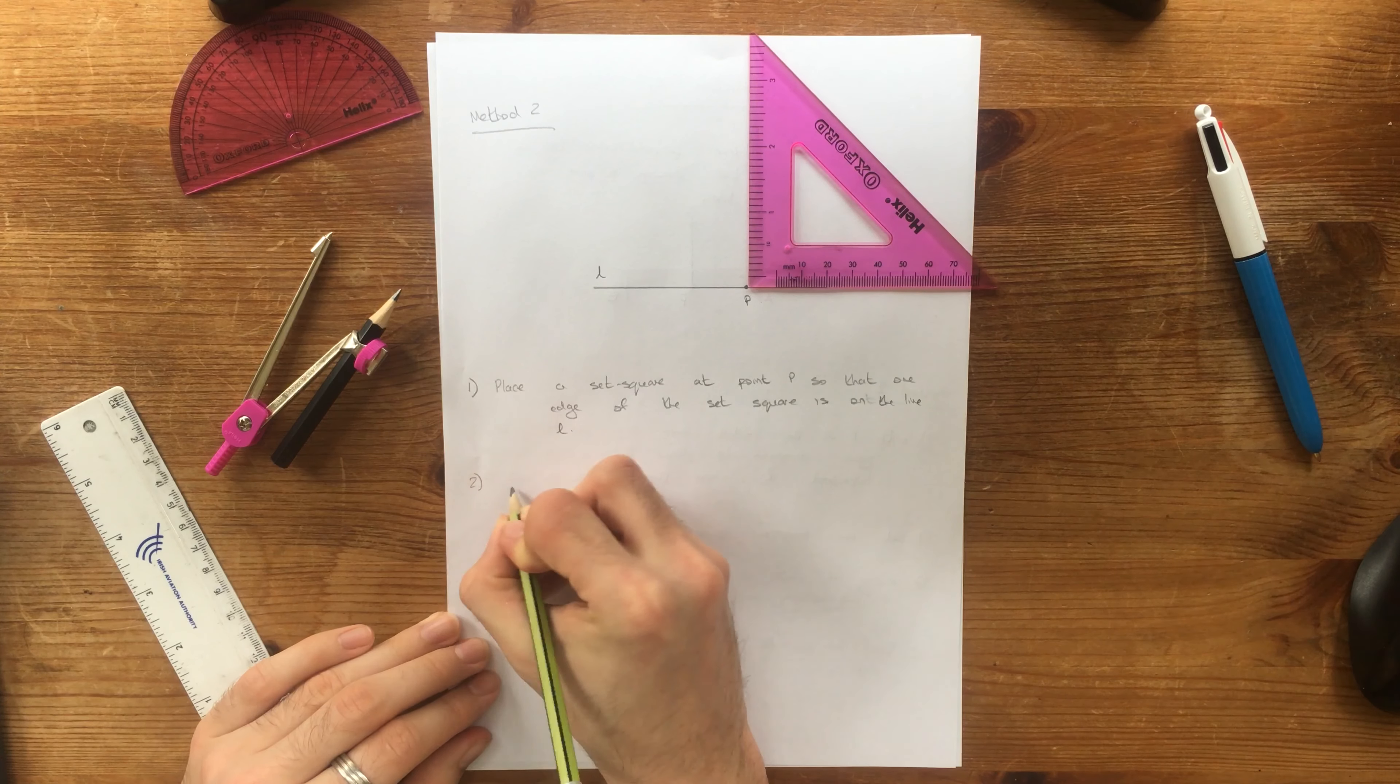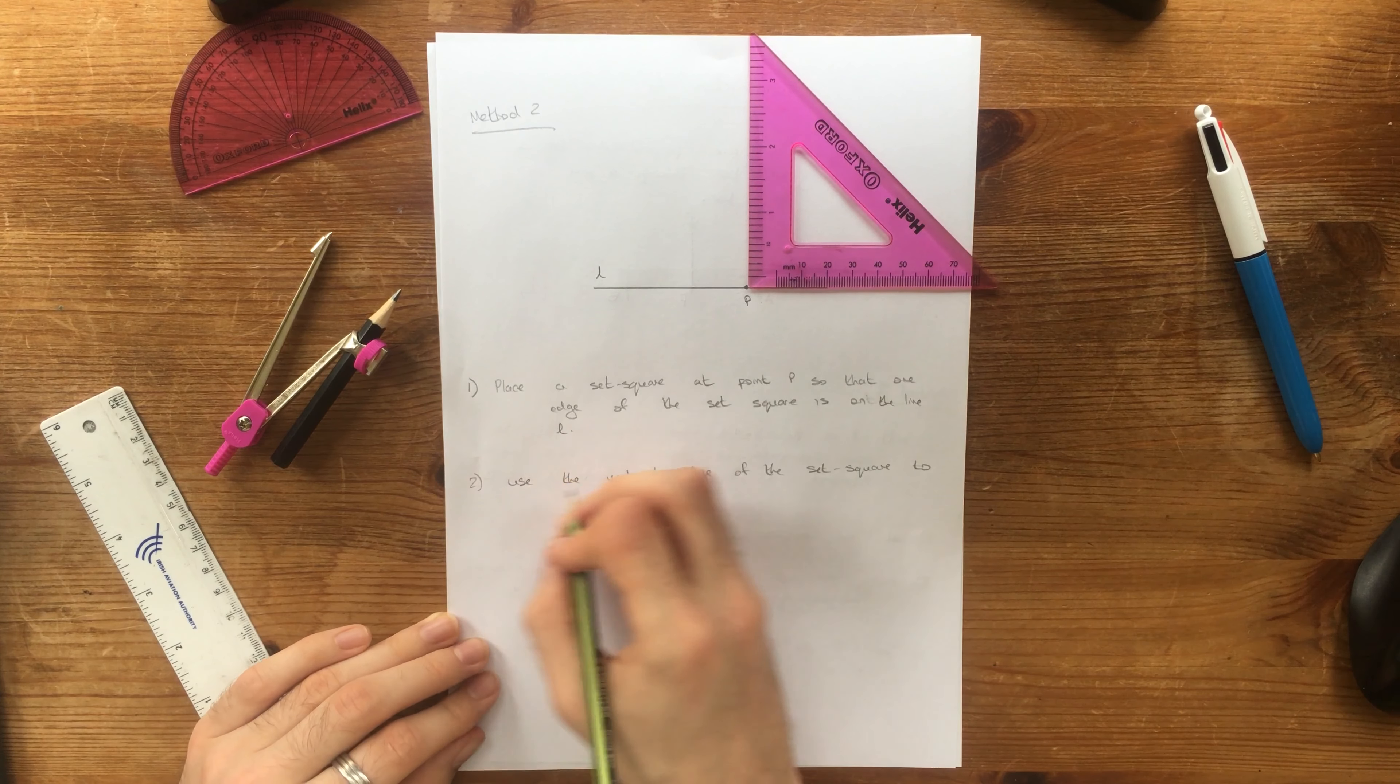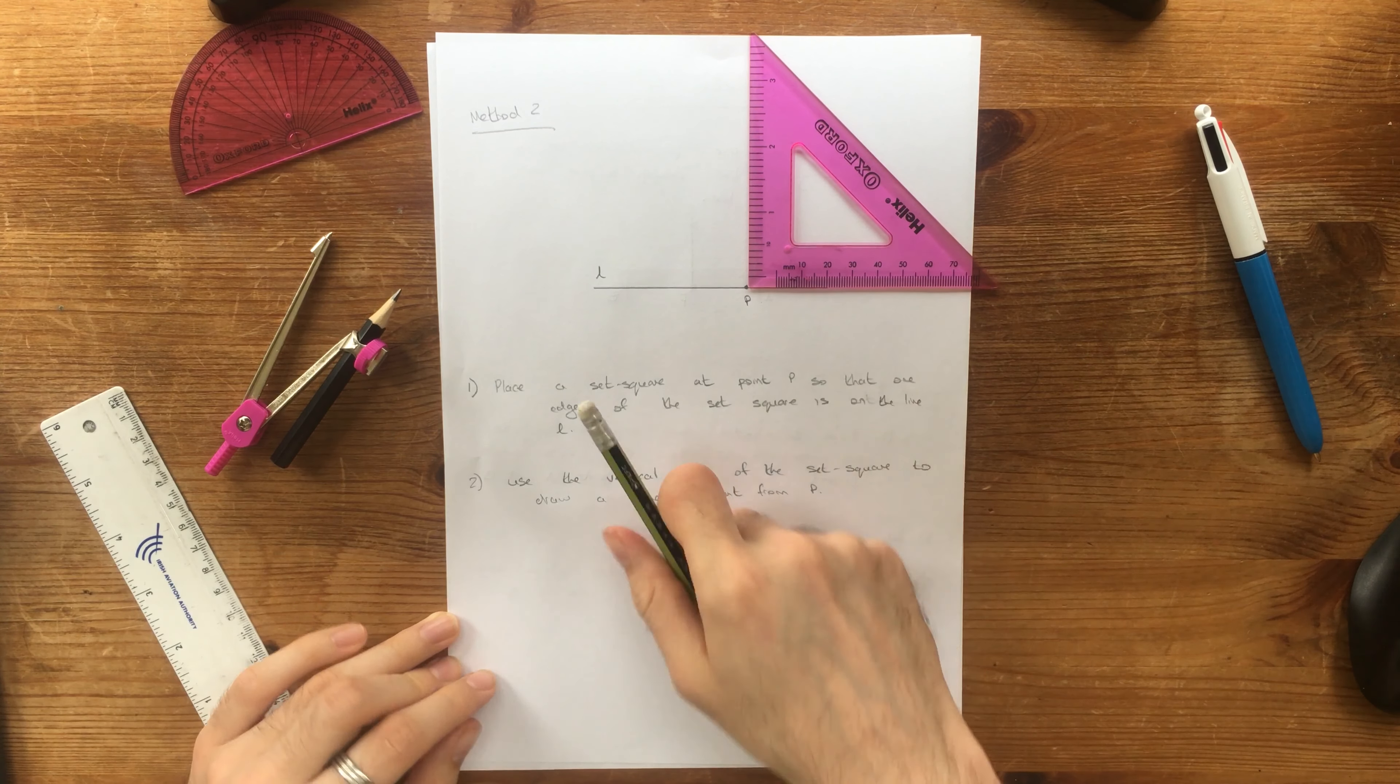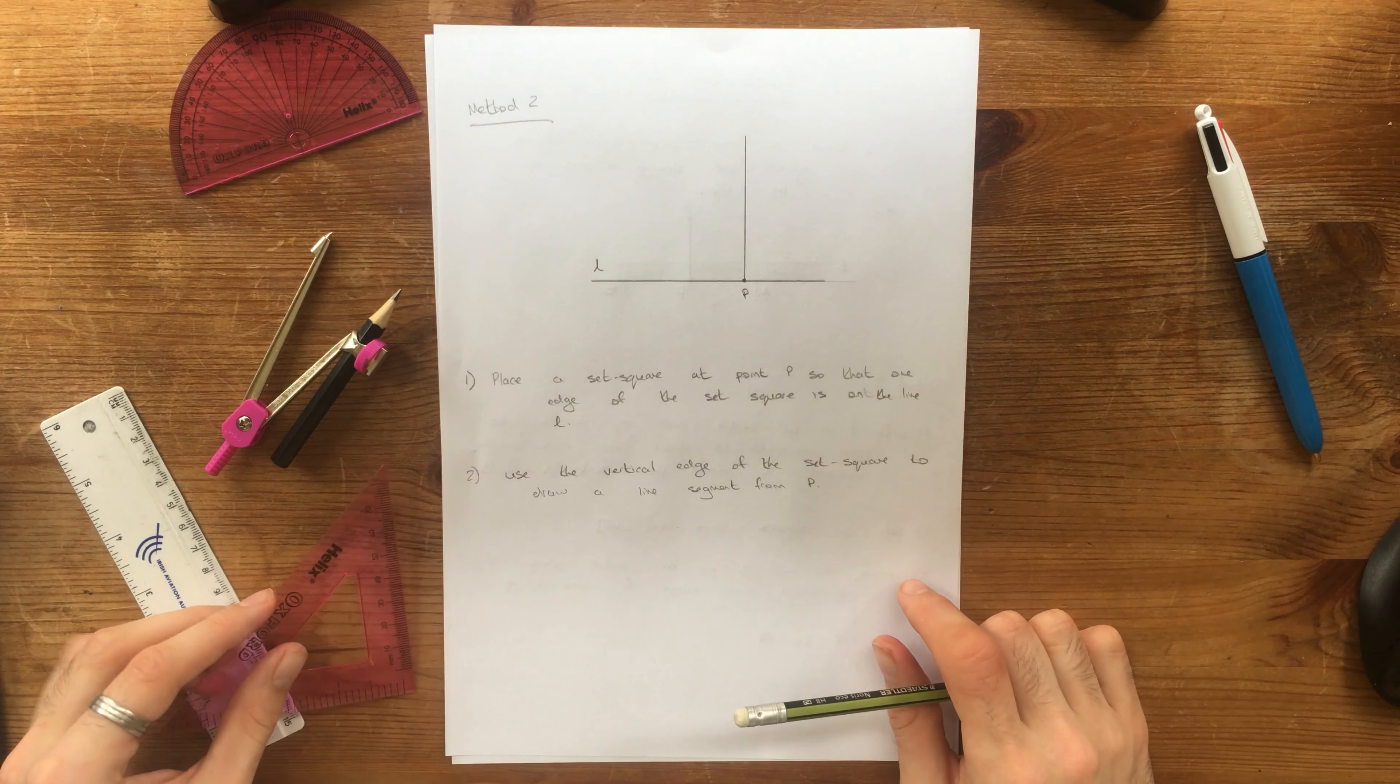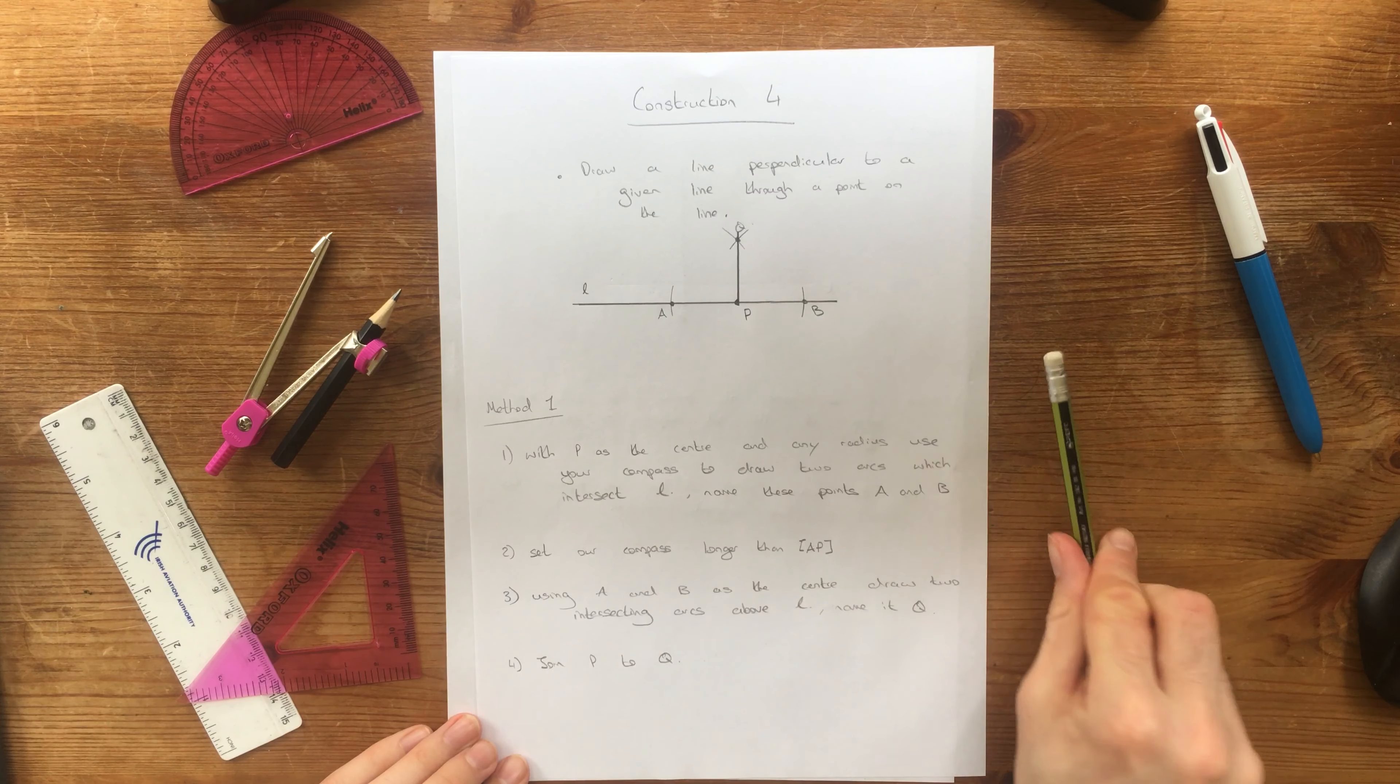Use the vertical edge of the set square to draw a line segment from P. So all we have to do is using this we're going to draw a line going up like this. And there we have it. This line is perpendicular to that point on that line. So method two obviously is a lot easier but they can ask you to do either method so you need to know how to use your compass to do this as well as just the set square.